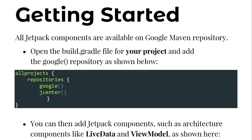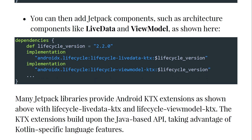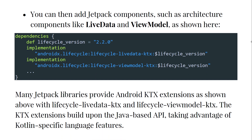Under the repositories section, add the Google Maven repository. You can then add Jetpack architecture components such as LiveData and ViewModel as shown. In the next videos we are going to cover LiveData, ViewModel, Room database, and other architecture components like Navigation and Data Binding.